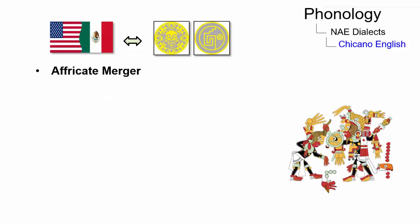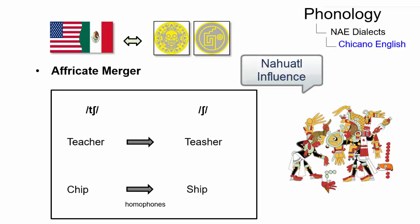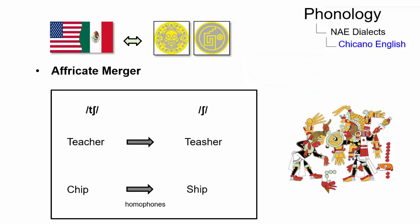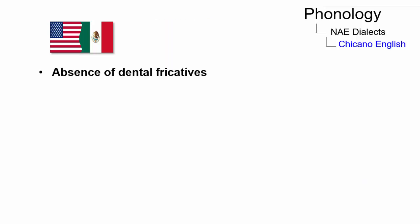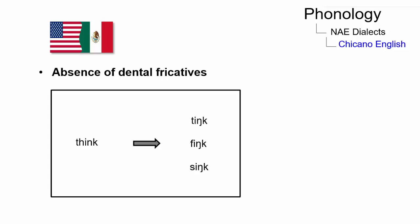Probably as a result of the influence of Nahuatl, affricates such as 'ch' and 'sh' are merged, leading to homophones such as 'chips' and 'ships.' Another phonological feature of Chicano English is the absence of dental fricatives, resulting in a pronunciation of 'think' as 'tink' or 'sink.'